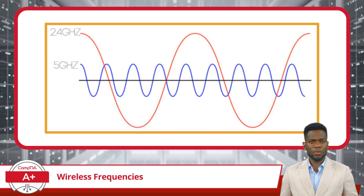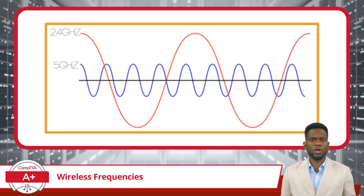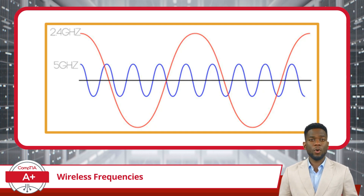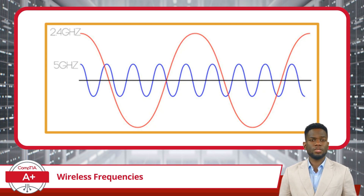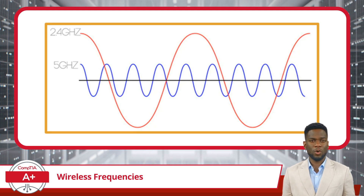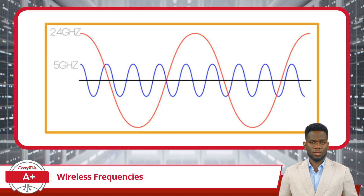It's like a slow but steady marathon runner. The 2.4 gigahertz band offers better range, meaning it can travel further, making it ideal for providing Wi-Fi coverage in larger spaces. It can also penetrate solid objects like walls more effectively. However, since it's quite popular, the 2.4 gigahertz band can get crowded, leading to potential interference from other devices that also use this frequency.